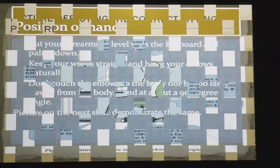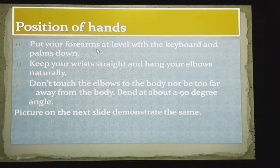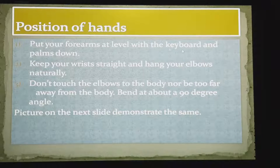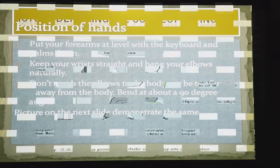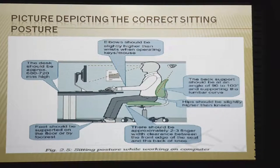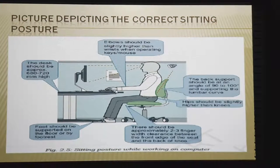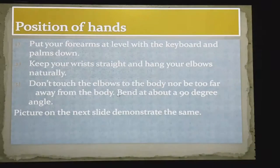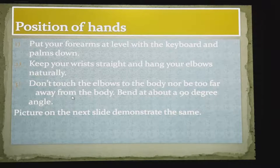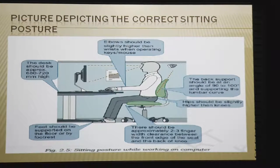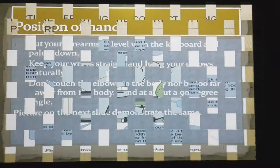Apart from sitting posture, some other postures are also important. The second factor is positioning of hands. Put your forearms at level with the keyboard and palms down — our forearms should be at the same level as the keyboard with palms facing down. Keep your wrist straight and let the elbow hang naturally. The elbow should be straight and hang naturally, meaning we should not use any support for our elbow — it should hang naturally.